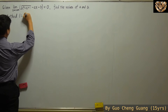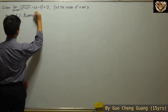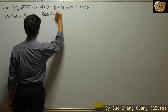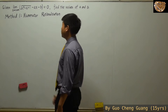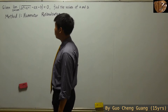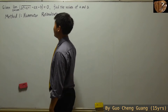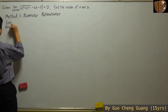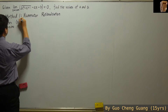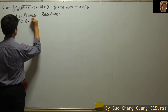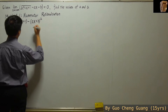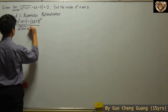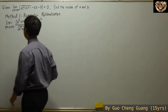Method 1 is numerator rationalization. Essentially, we look at this function — we have some kind of an a minus b form, and in this a minus b form, you can multiply and divide by a plus b. So what we see is the limit as x approaches positive infinity, and we will have (x² - x + 1) minus (ax + b)² in the numerator, divided by square root of (x² - x + 1) plus ax plus b.